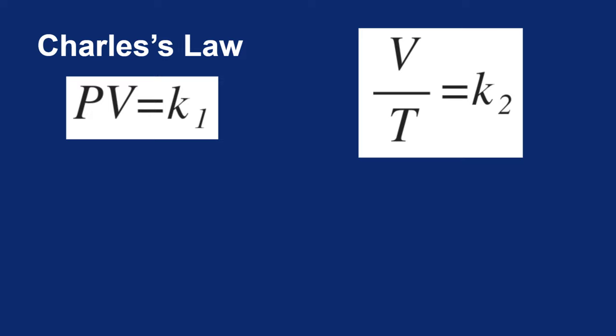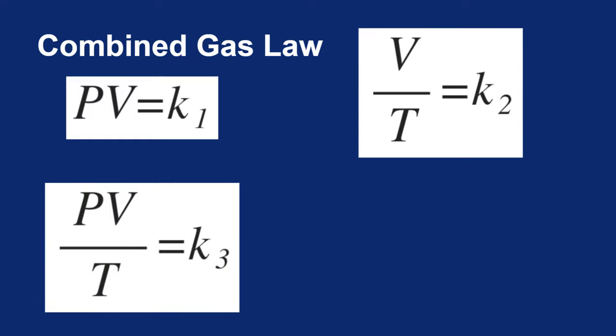Today I want to look at the combined gas law, which is just a combination of Boyle and Charles. And so if you smush these two equations together, you get PV over T equals a constant.